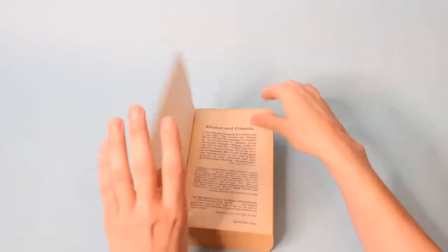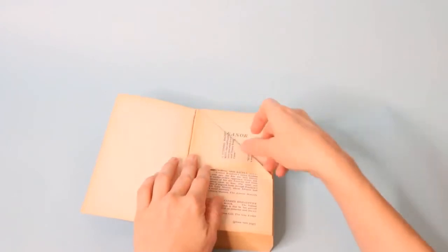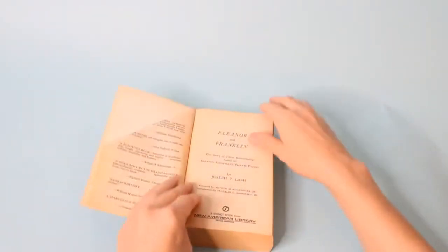First we're going to start out with an easy folding method. Take the top right corner and fold it down to the center of the book so that it makes a triangle.